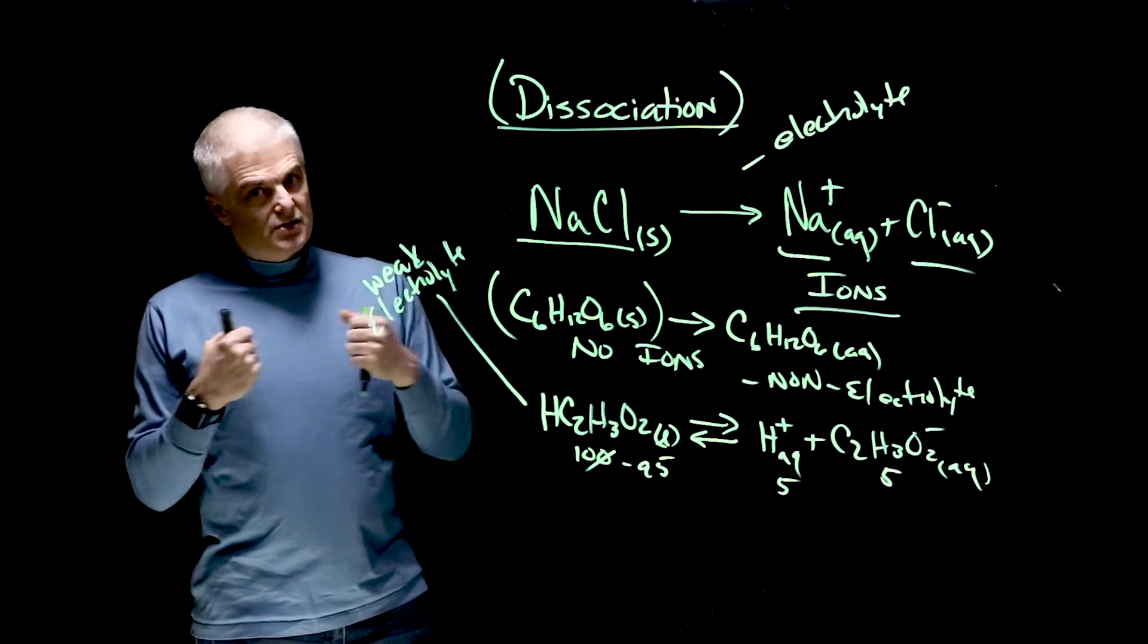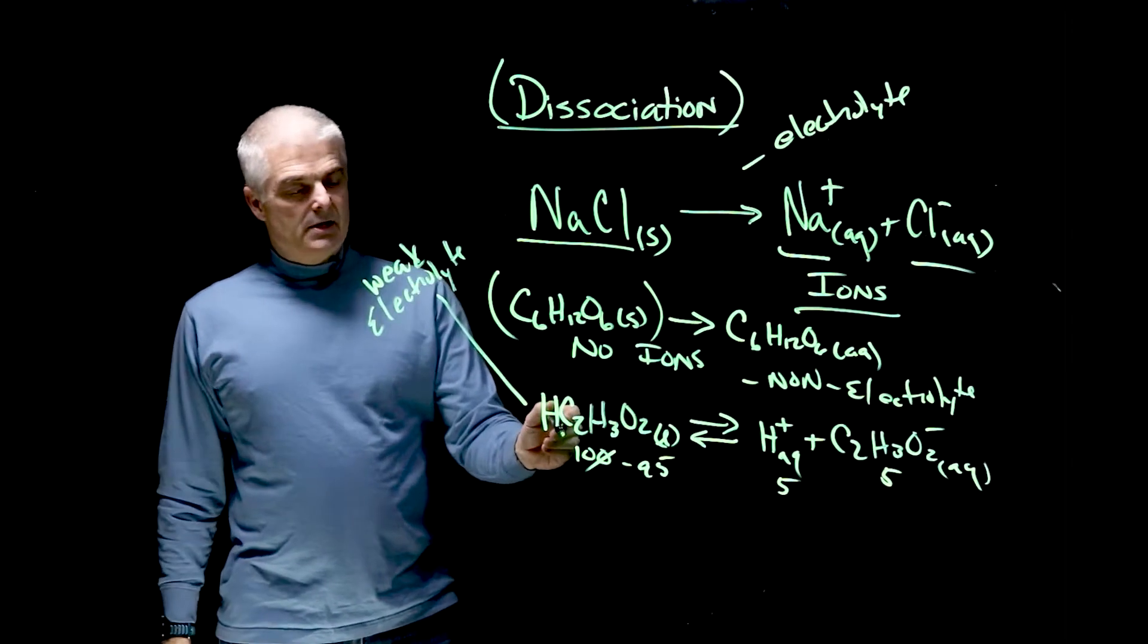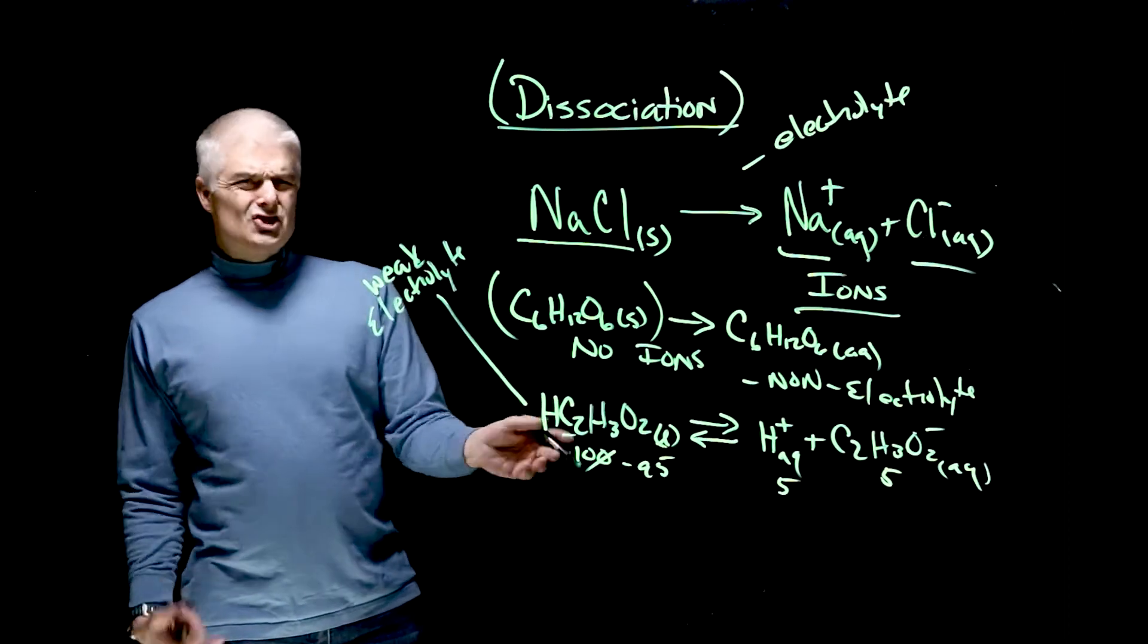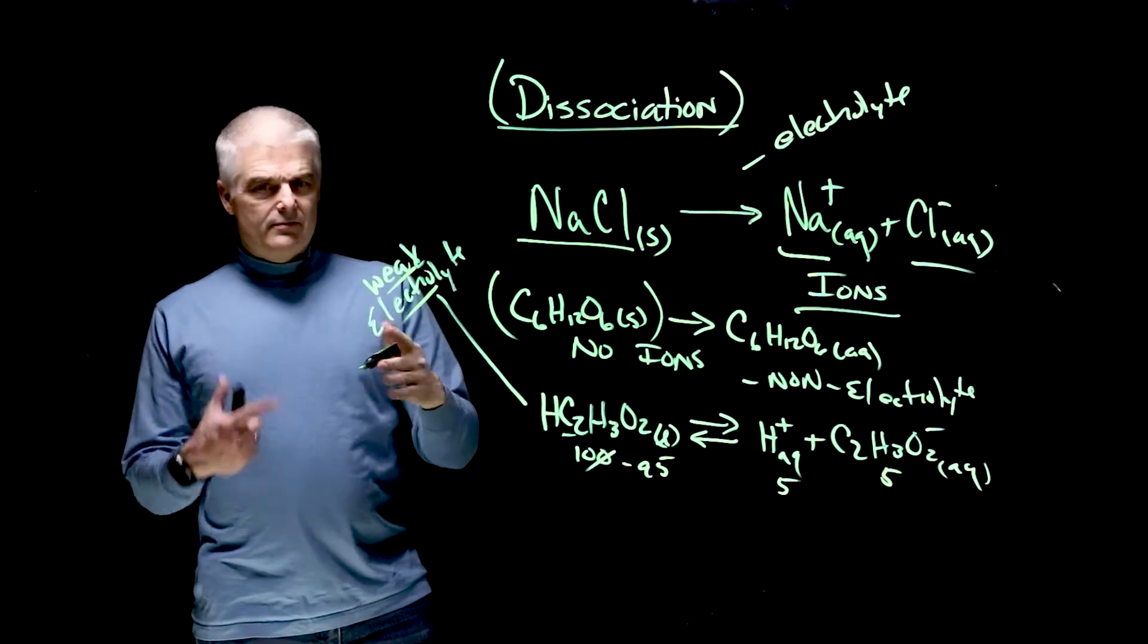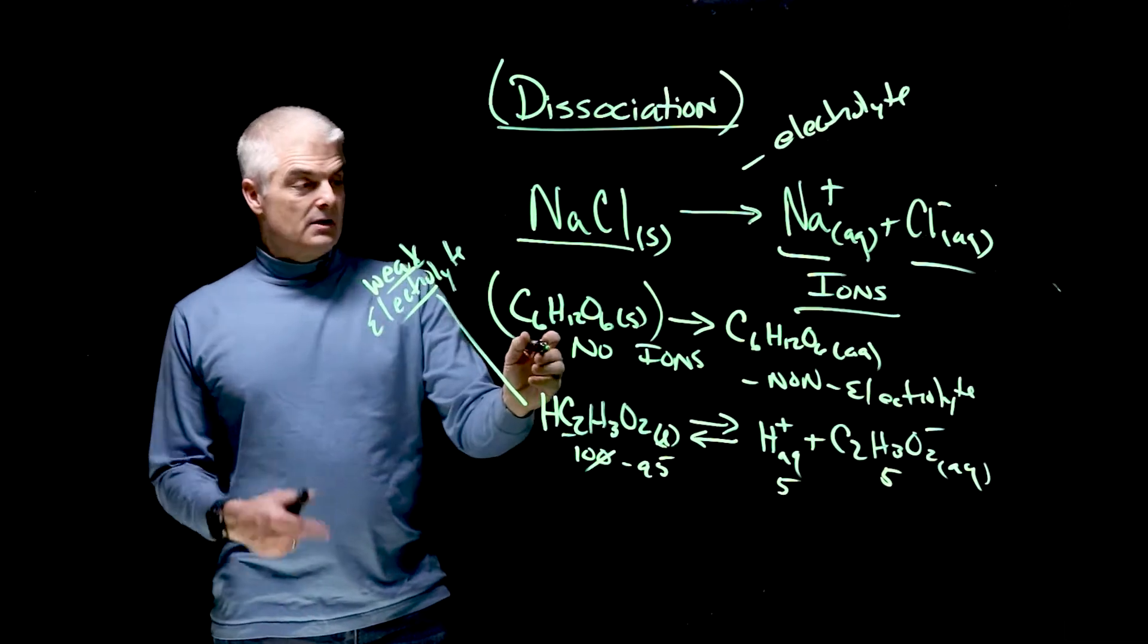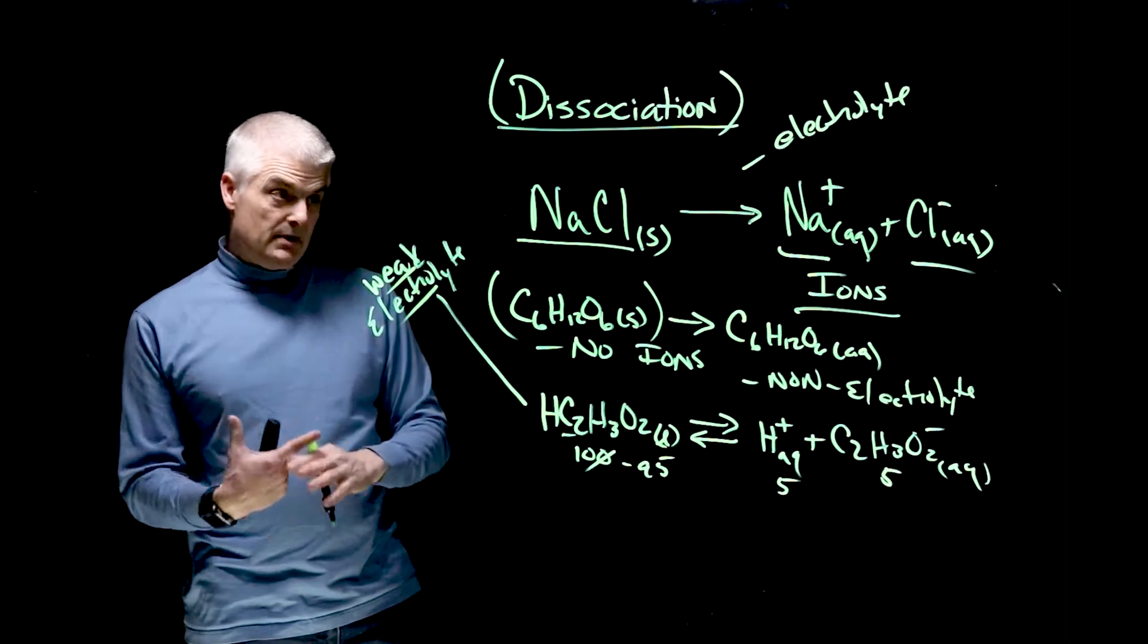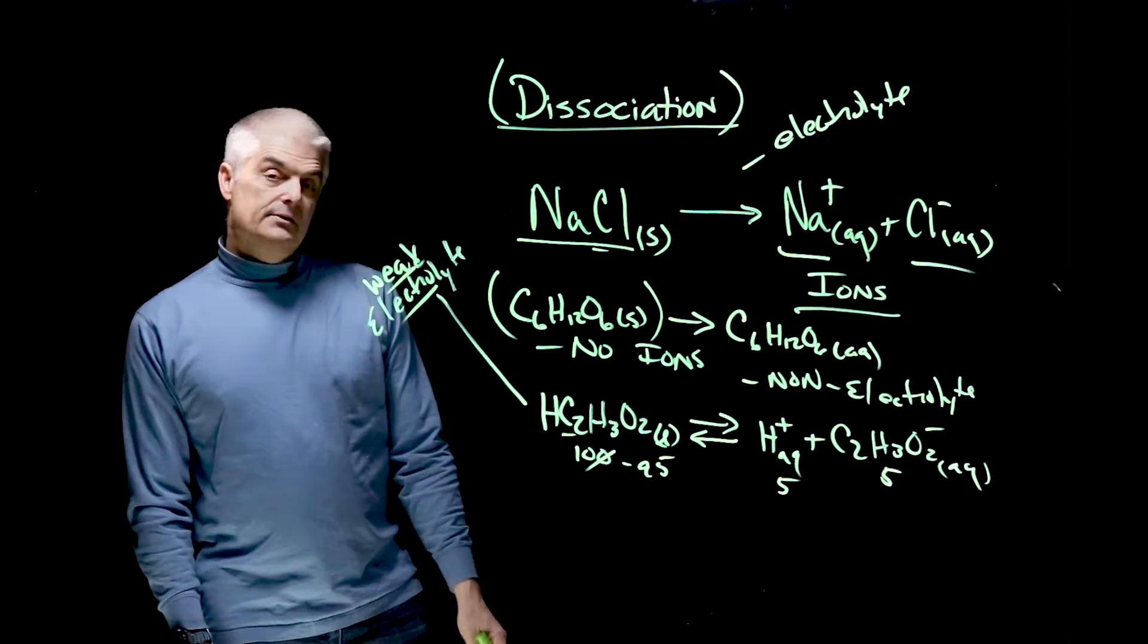And acetic acid, only some of them can break apart because the bonds are weakish strong, they're in between, right? They're in between. So weak electrolytes have sort of medium bonds, non-electrolytes have strong bonds, and these have weak bonds.